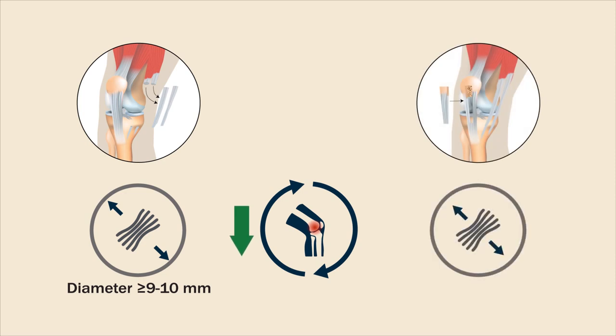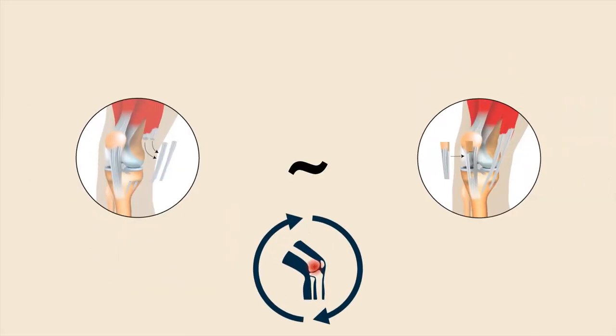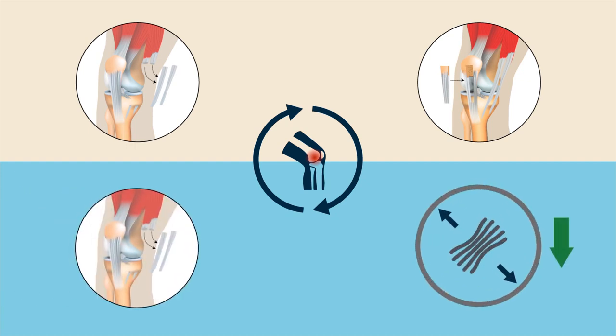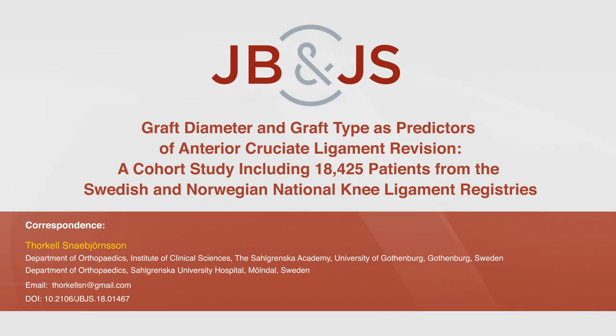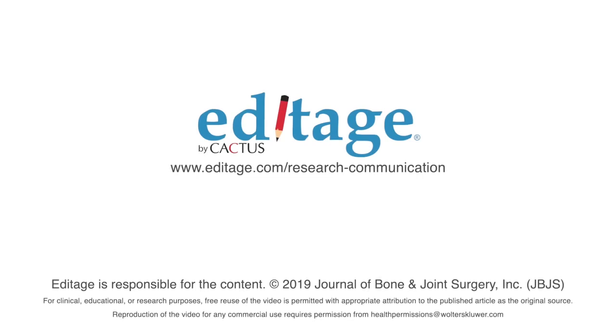Together, these findings indicate that graft type independently does not affect ACL revision risk, but a larger hamstring tendon autograft diameter is shown to decrease the revision risk.